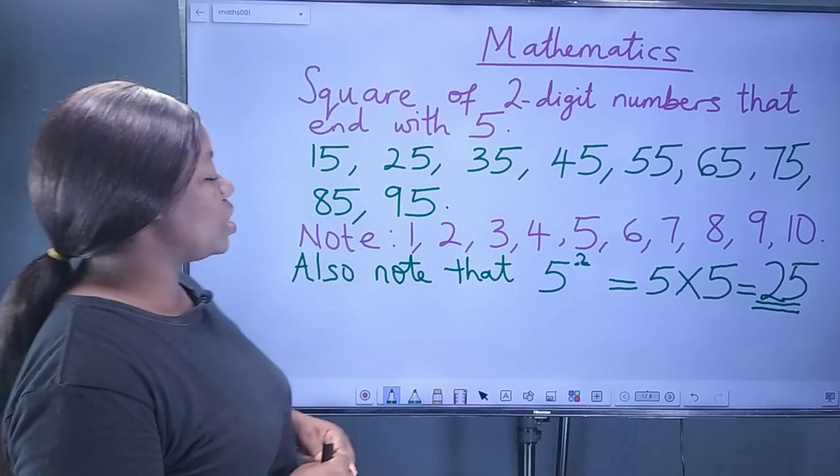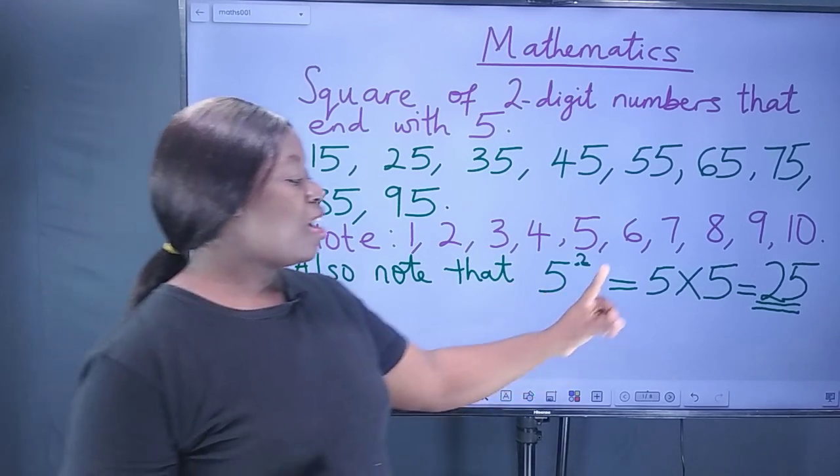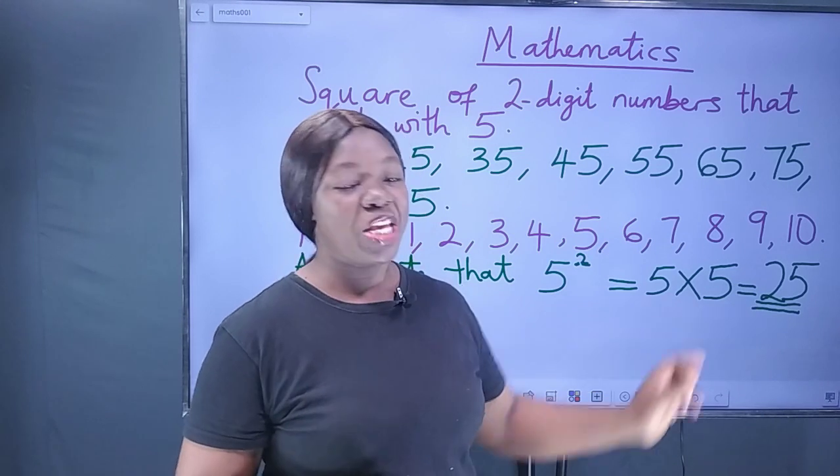And also, take note that the square of 5 means 5 times 5 which is equal to 25.